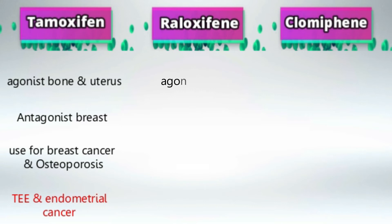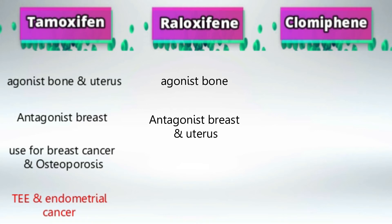Next we have raloxifene, which can agonize the estrogen receptor in the bone and antagonize it in the breast and uterus. So again, because it agonizes estrogen receptor in the bone, we can use it to treat osteoporosis. And unlike tamoxifene, raloxifene doesn't have any estrogen agonism in the uterus, so there is no risk of endometrial cancer.